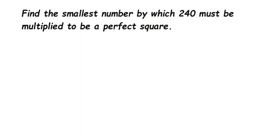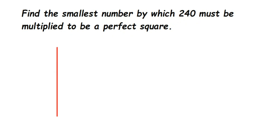This question was asked in the comments: find the smallest number by which 240 must be multiplied to get a perfect square. 240 is not a perfect square, so we have to make it one by multiplying with the smallest number. Whenever they ask for the smallest or least number to be multiplied or divided, you have to use the prime factorization method.